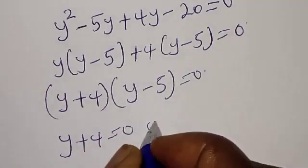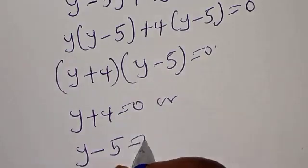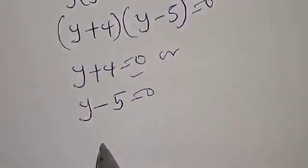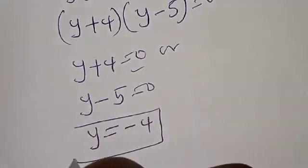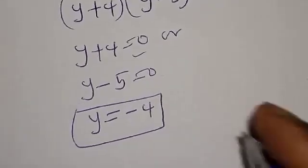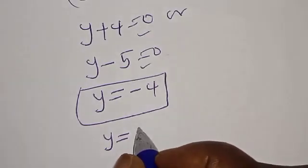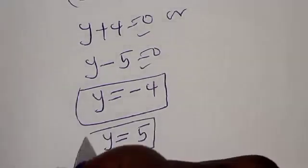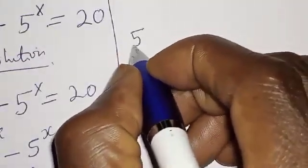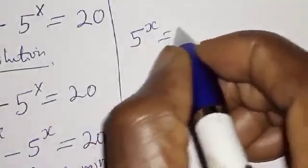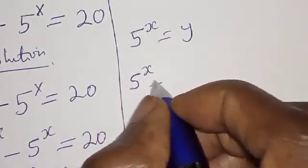Therefore y plus 4 is equal to zero, or y minus 5 is equal to zero. From the first case, y is equal to minus 4. From the second case, y is equal to 5. Now remember that we said 5 raised to power x is equal to y.